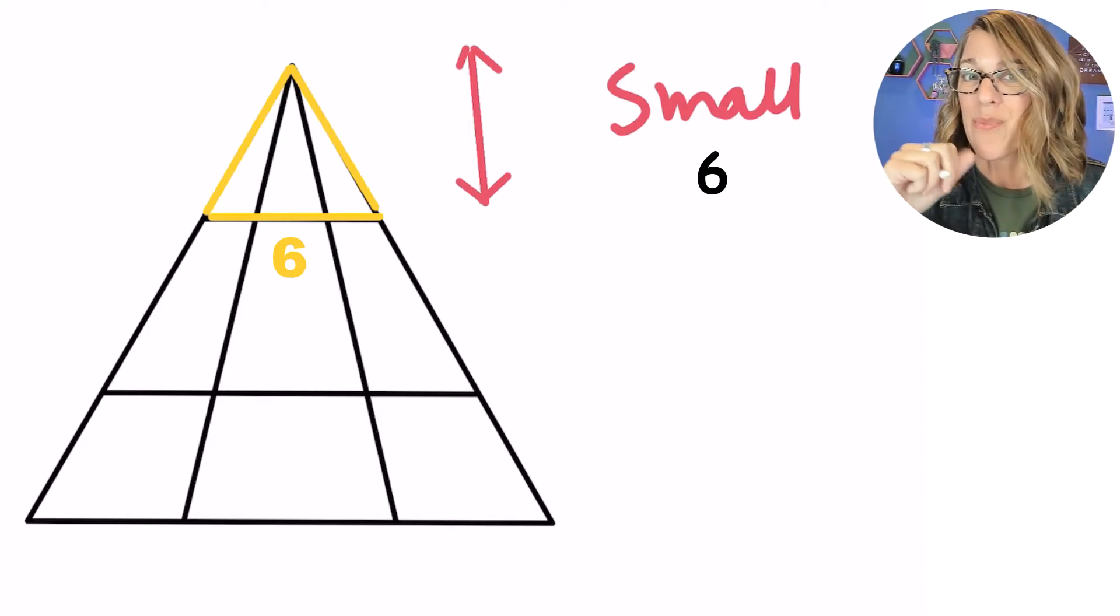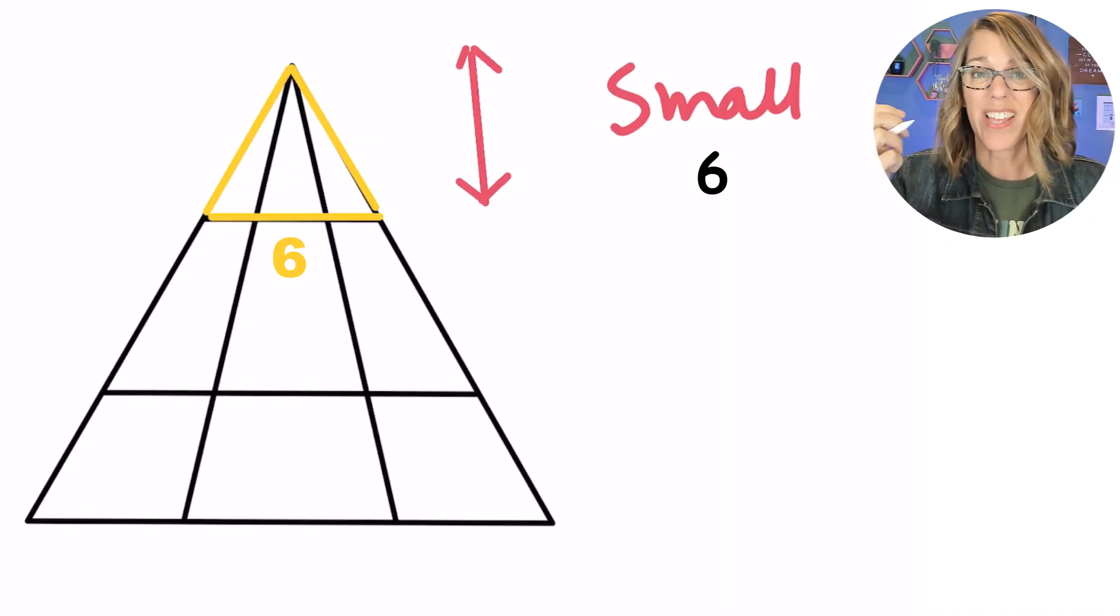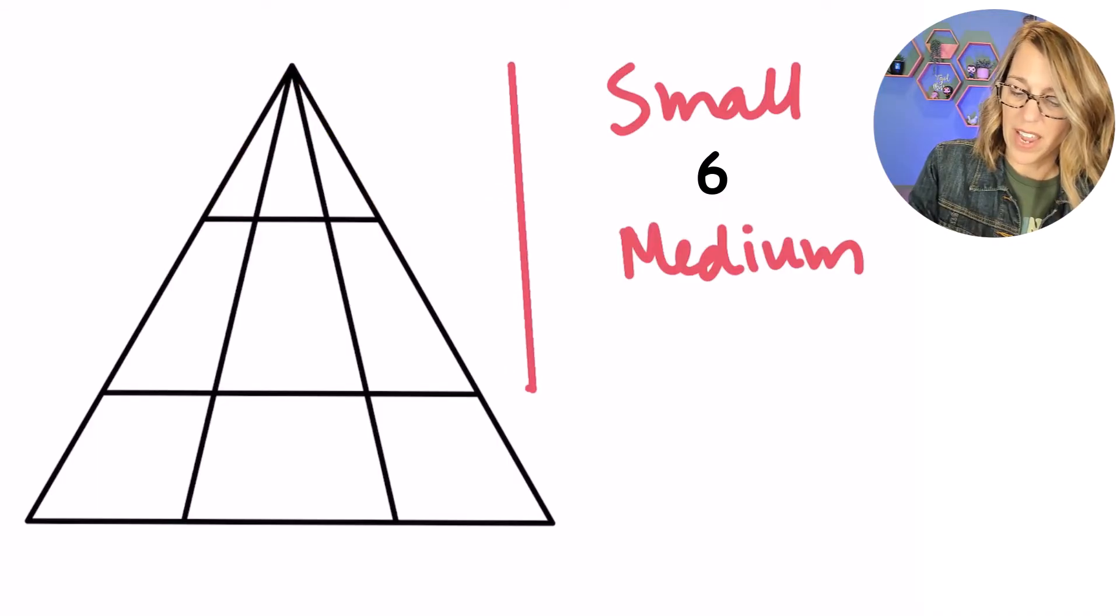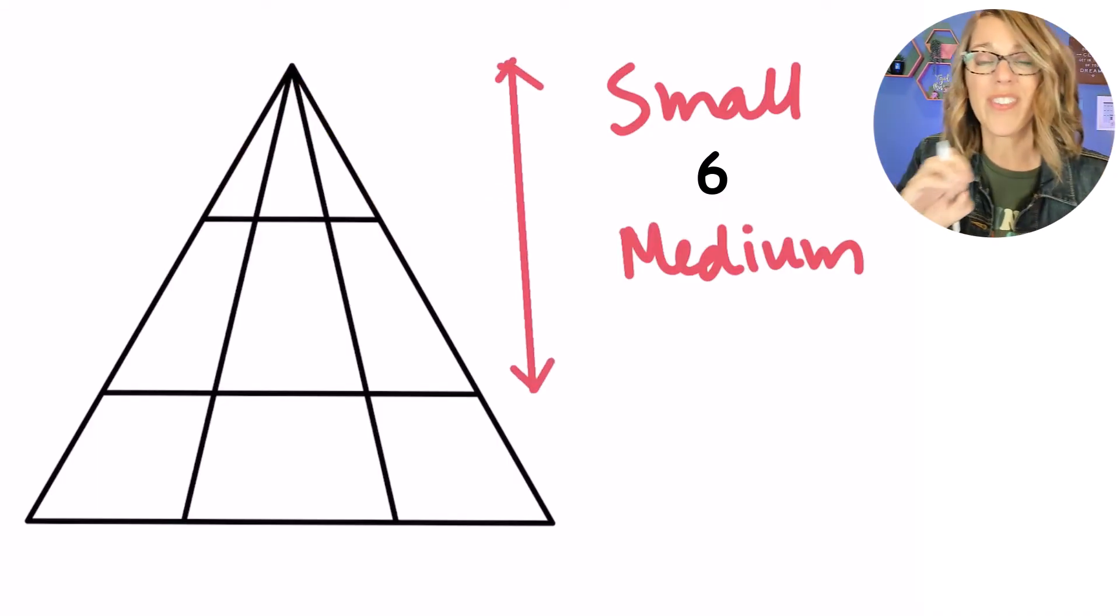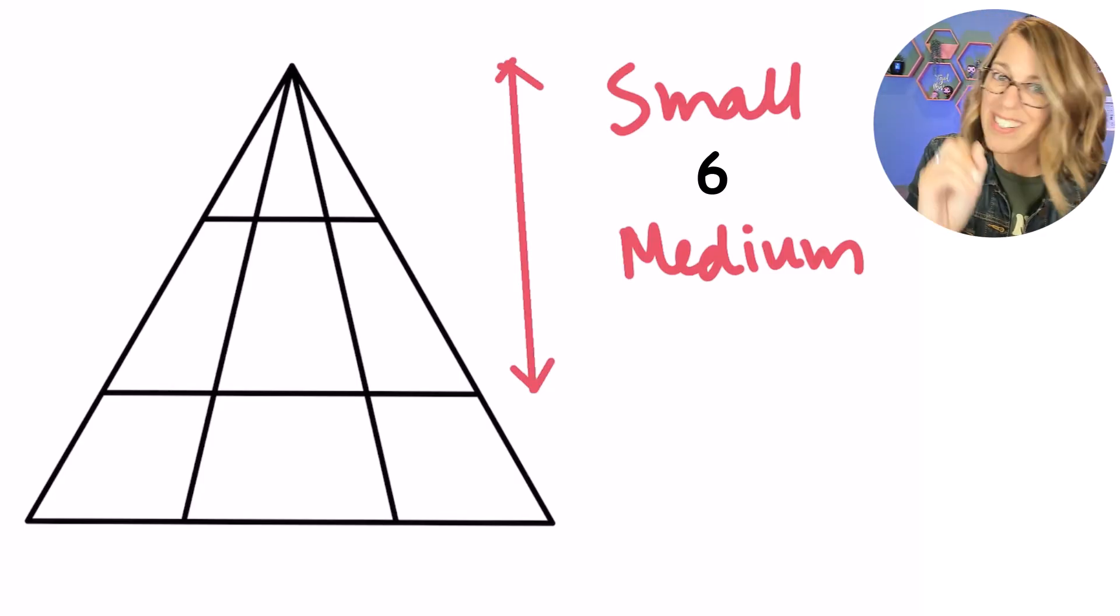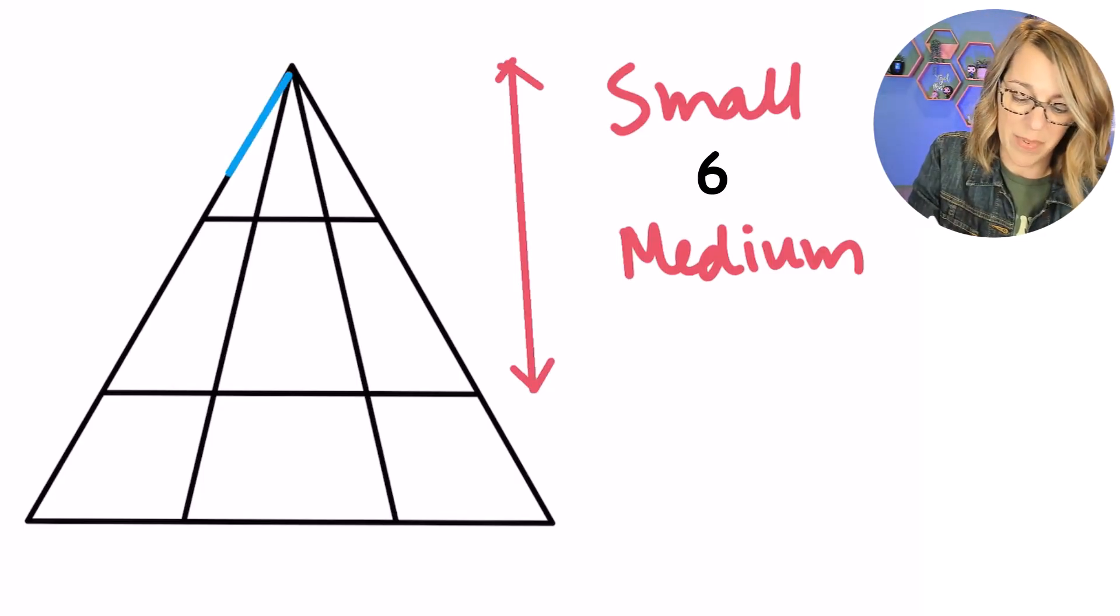But let's continue with the next group which has the medium height. The triangles that have this medium height are going to have the height that goes down to the second horizontal line. As I count these up, it's going to look really similar to what we did before.